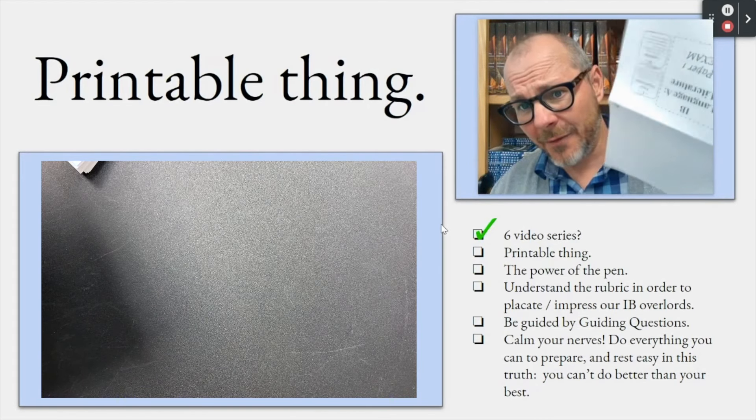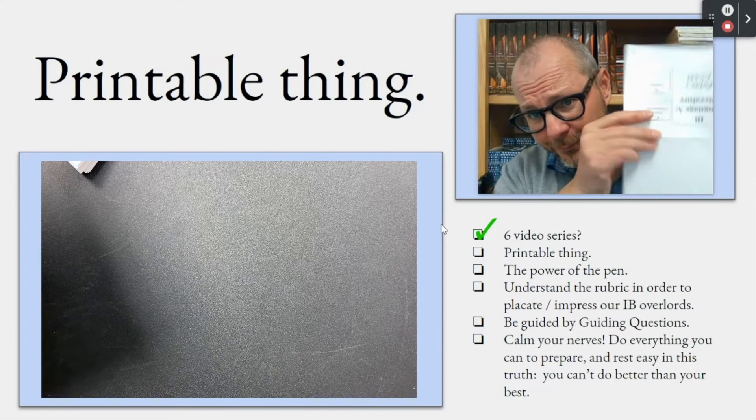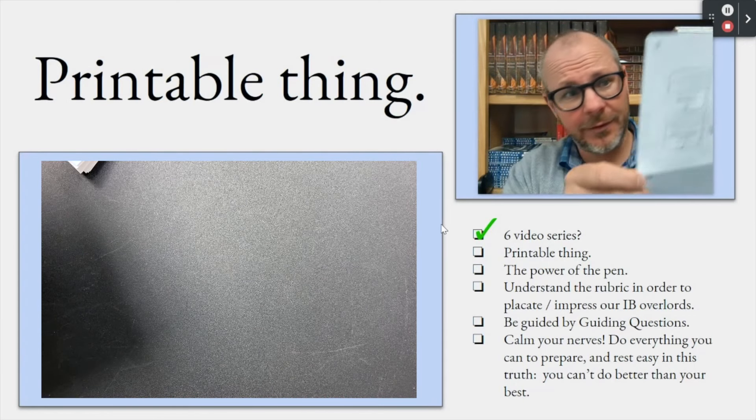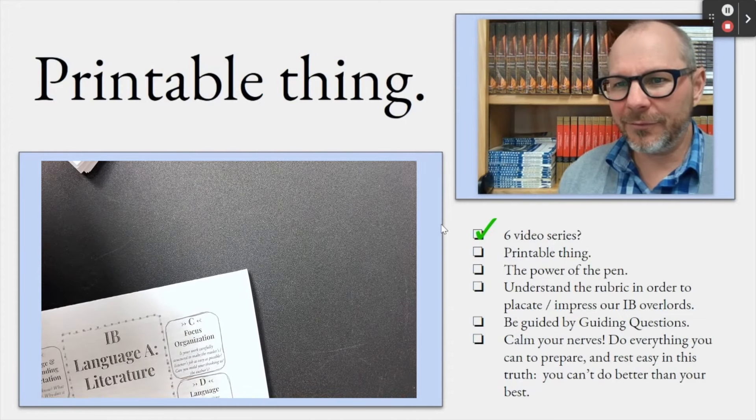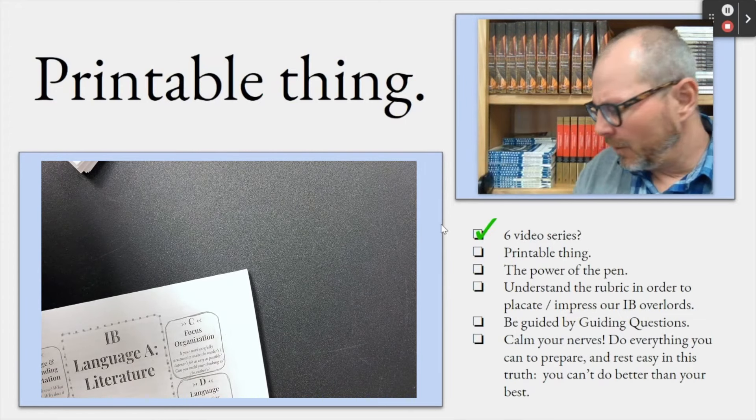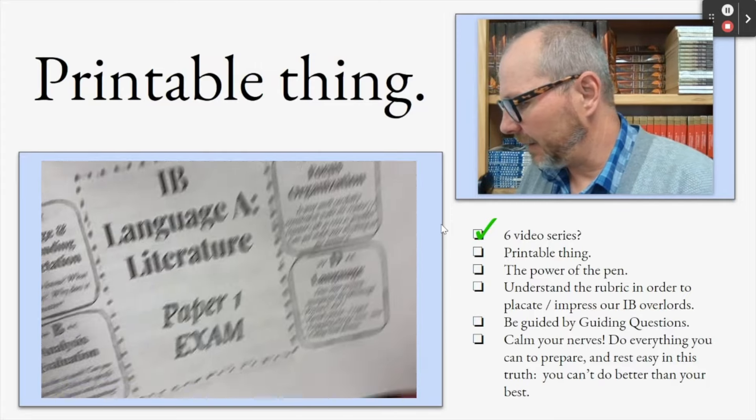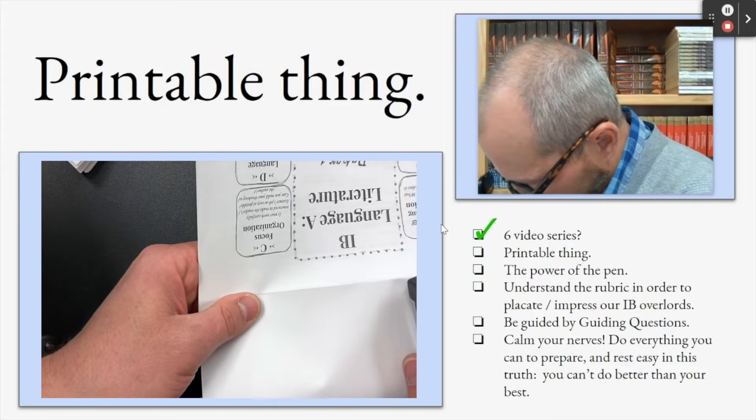So a printable thing. You have a printable thing. You've printed this out. It looks just like this. It is six pieces of paper. You're going to need one of these. You fold it in the middle. And this is a high level skill right here.